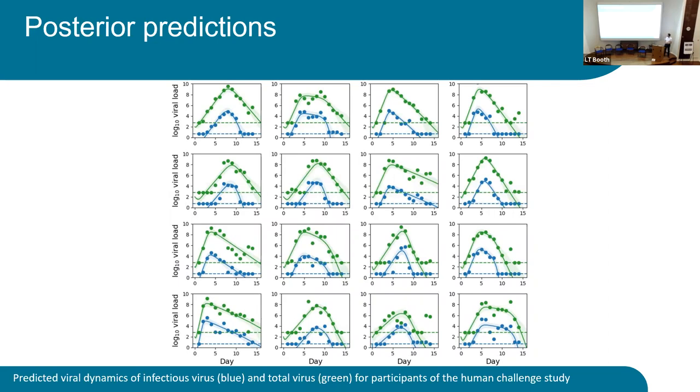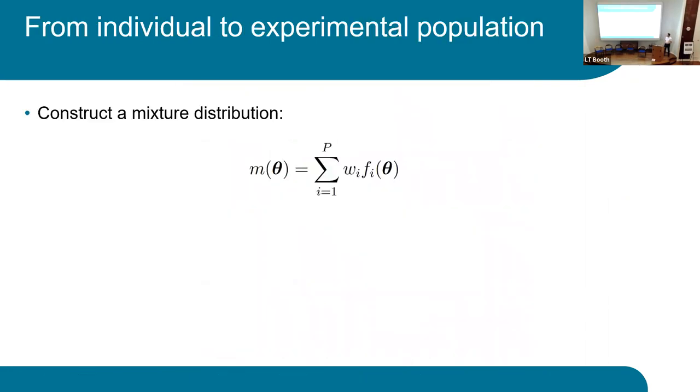And we can reproduce the viral dynamics on the volunteers both in terms of viral load and in terms of PCR positivity across the board as well. But, as I said earlier, not a good representation of the general population. So we can do something a little bit more with this. What we did is we created a mixture distribution of the parameter distributions from each of those individuals to create this mixture distribution. We equally weighted it at this point because we didn't believe that any one individual was any more representative than any other.